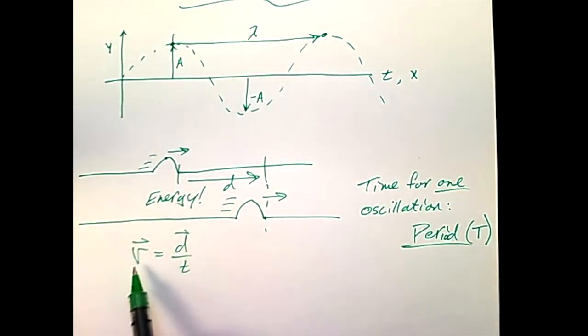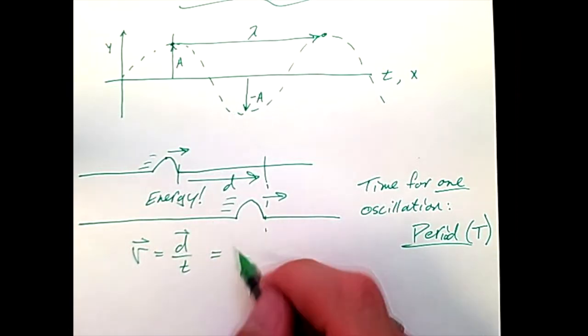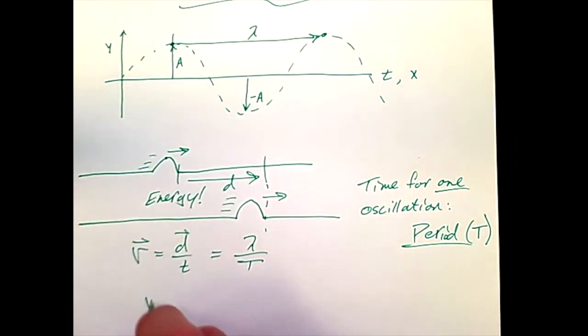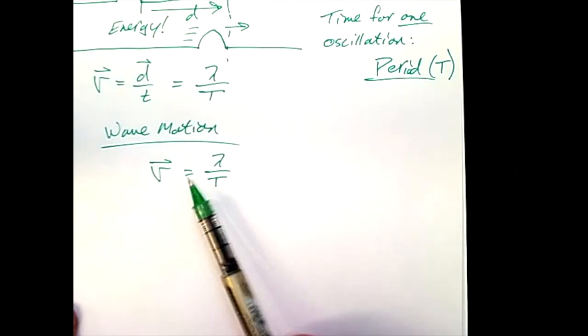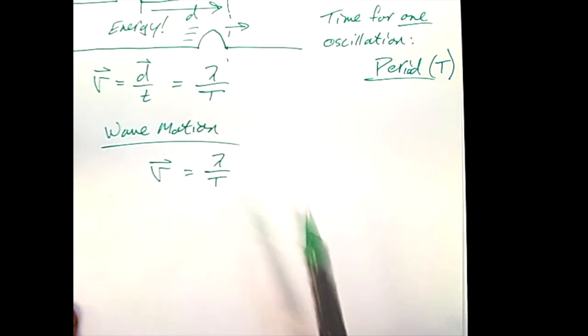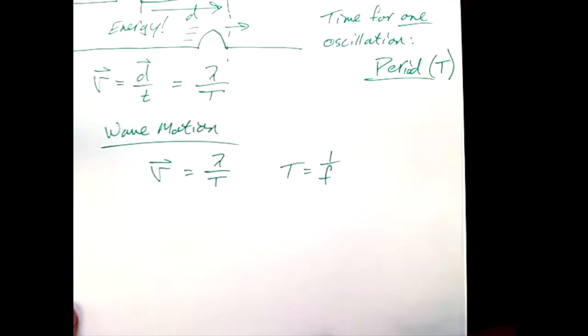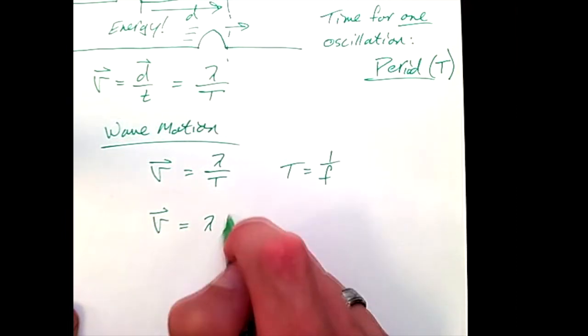So taking our speed formula, our velocity formula, from our linear motion discussion and applying these terms, the displacement that the energy travels over time is described as lambda, and the time the vibration occurs is given period as capital T. So wave motion can be written as the velocity of the wave equal to the wavelength divided by the period. And then, thanks to our relationship of period to frequency through the inverse law, we can also write this as the velocity of the wave equal to the wavelength times the frequency.